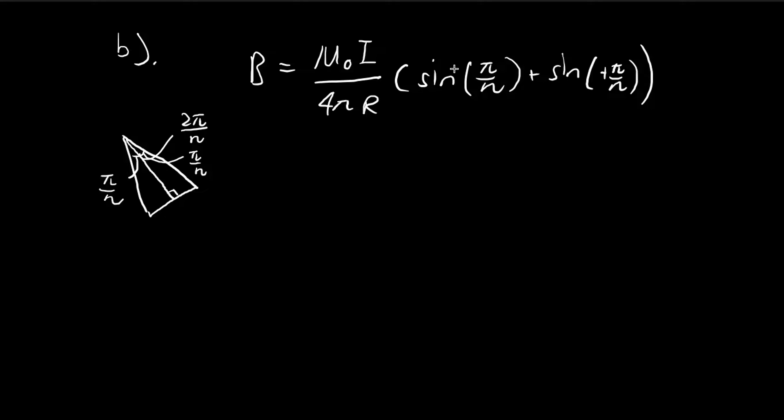You arrive at this expression. The two negatives cancel out, so you get two of these sin(π/n) terms, and then you multiply the whole thing by n because we have n sides. The 2 cancels out, so we get nμ₀I over 2πR times sin(π/n). This is the answer for part B.